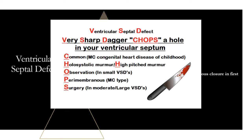To remember VSD: as soon as you see VSD, think 'very sharp dagger' — which chops a hole in your ventricular septum. CHOP stands for: C = Common (most common congenital heart disease); H = Holosystolic murmur; O = Observation for small VSDs; P = Perimembranous (most common type); and S = Surgery for moderate or large VSDs. So VSD → very sharp dagger → CHOP.